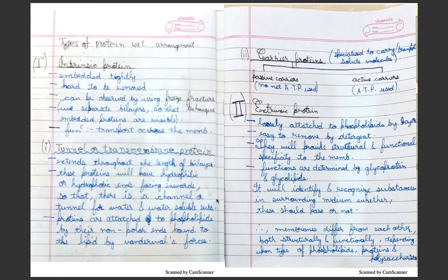The proteins are attached to the phospholipids by their non-polar ends bound to the lipid by Van der Waals forces. Carrier proteins are of two types again: passive carrier, where no net ATP is used, and active carrier, where ATP is used. These are specialized to transport solute molecules.